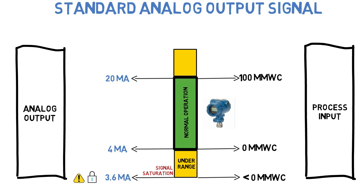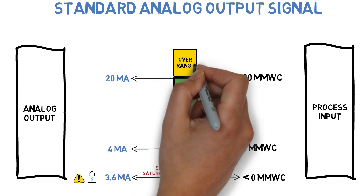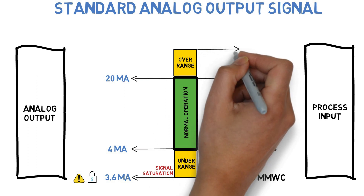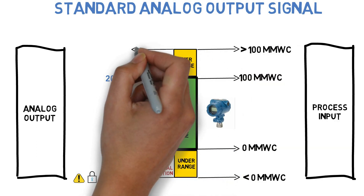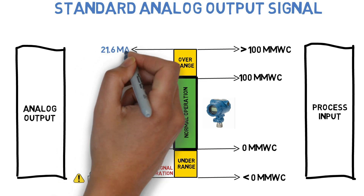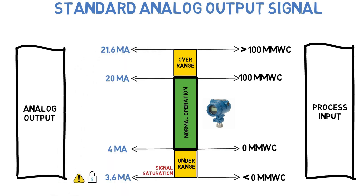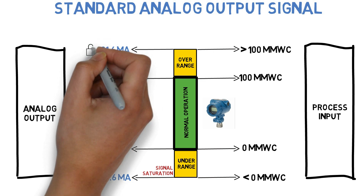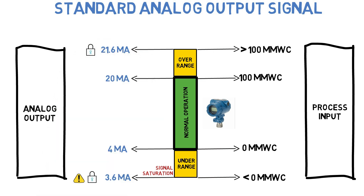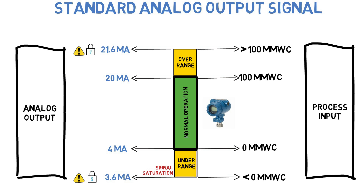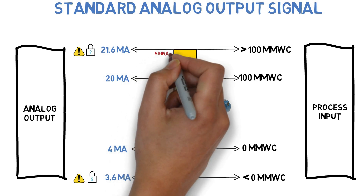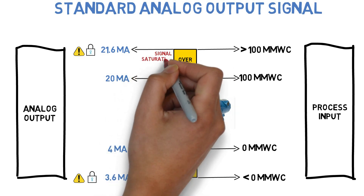If the process input value increases above the upper range value of the transmitter, the analog output signal also increases between 20 to 21.6 mA. If the process input exceeds the upper range value, the analog output holds at 21.6 mA with a warning to the control unit. This over-range signal is also referred to as Signal Saturation.